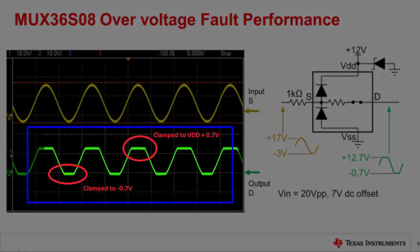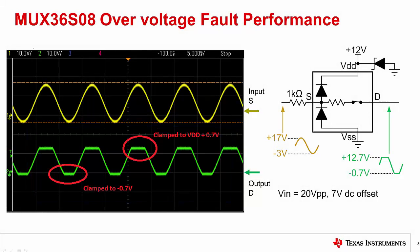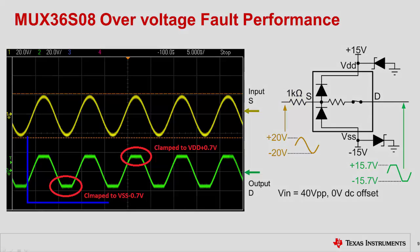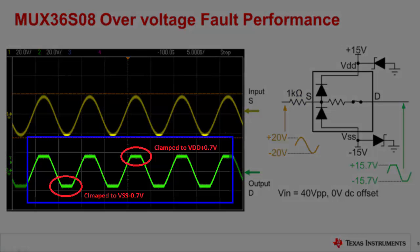This slide shows the same protection scheme with a dual plus and minus 15 volt supply. A 40 volt peak-to-peak, or 20 volt peak, input signal is applied with no DC offset. Again, the ESD diodes turn on and direct the overvoltage to the supplies. The 1k ohm input resistor limits current to prevent damage to the device. Notice that the output waveform is clipped or limited to a diode drop beyond the supply voltage.